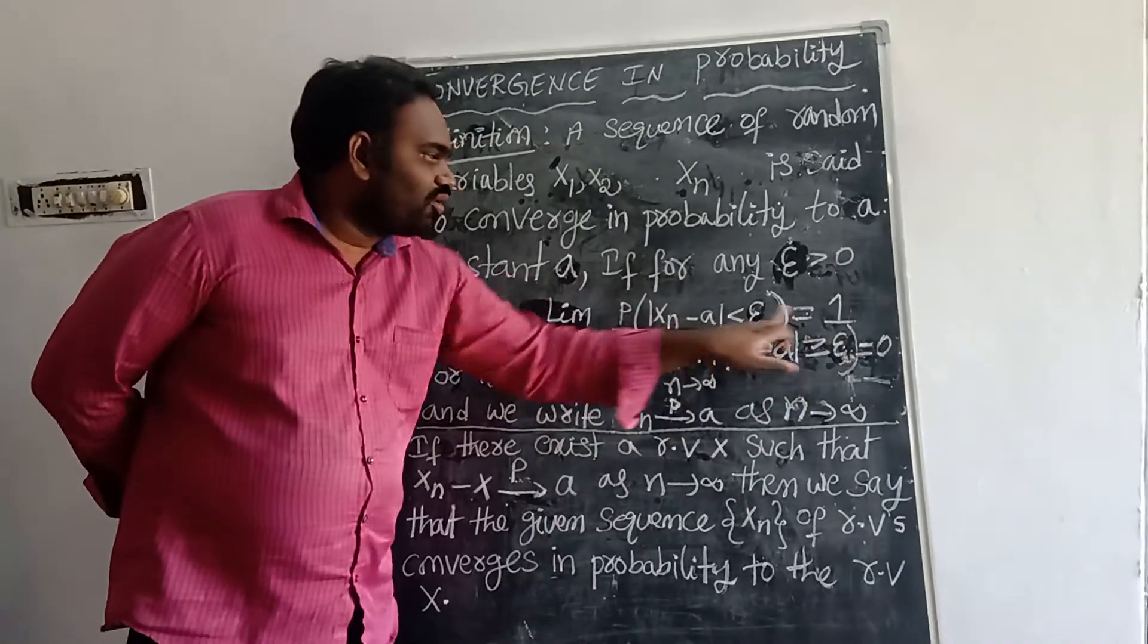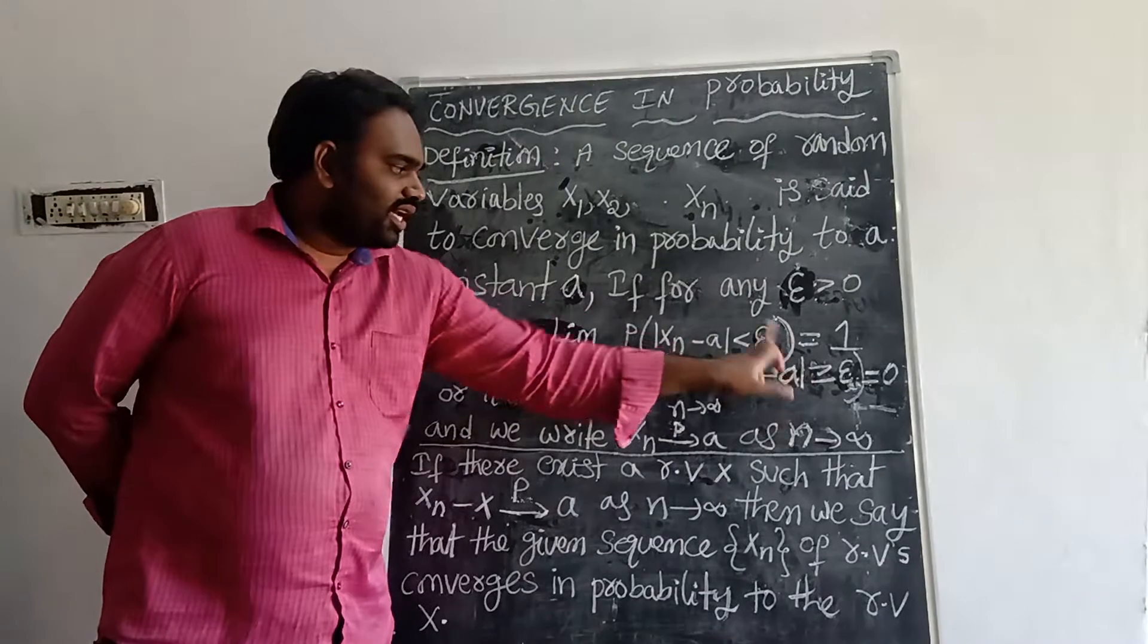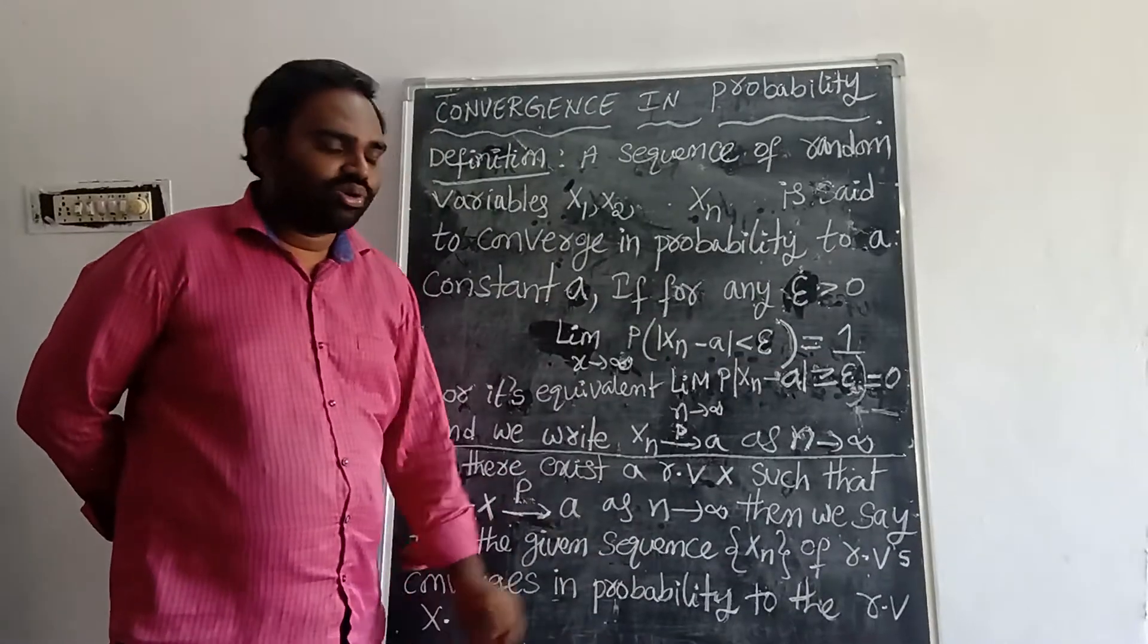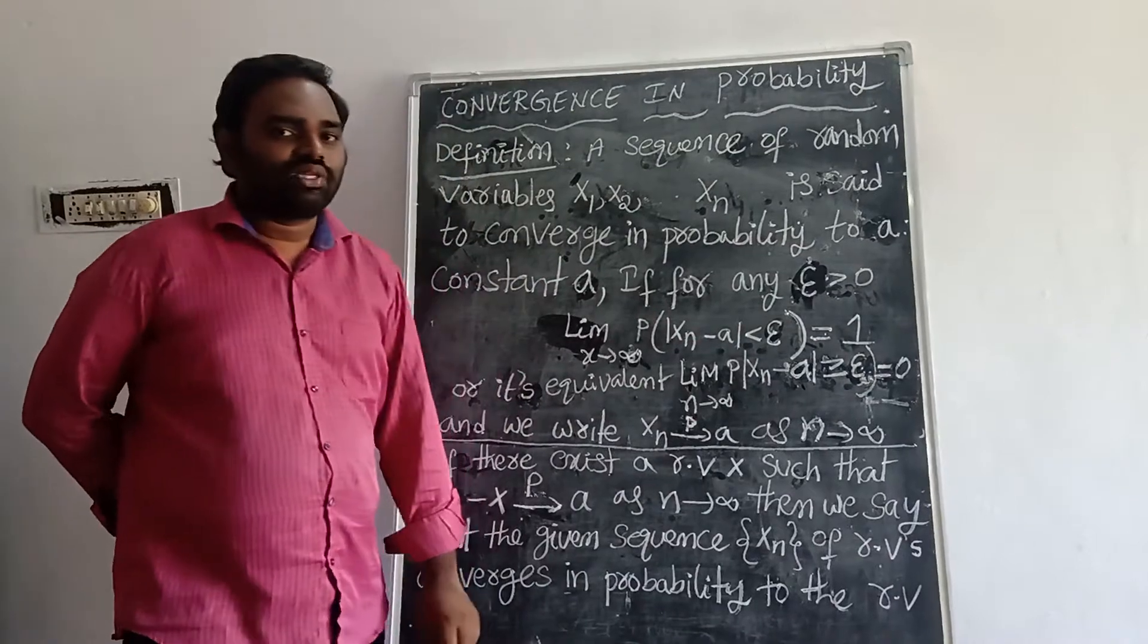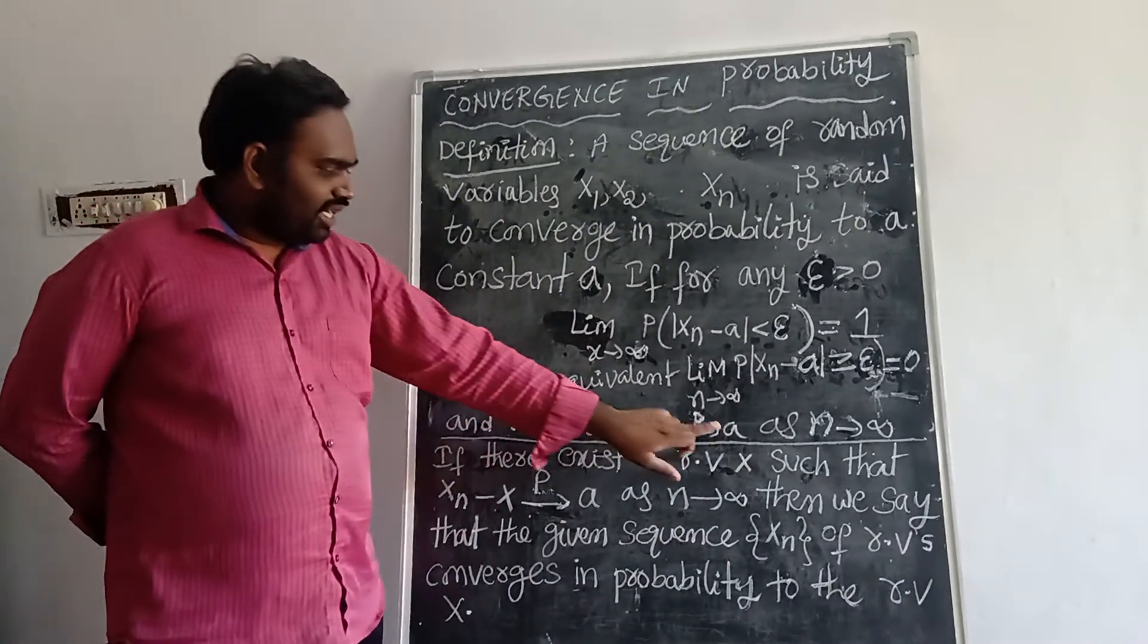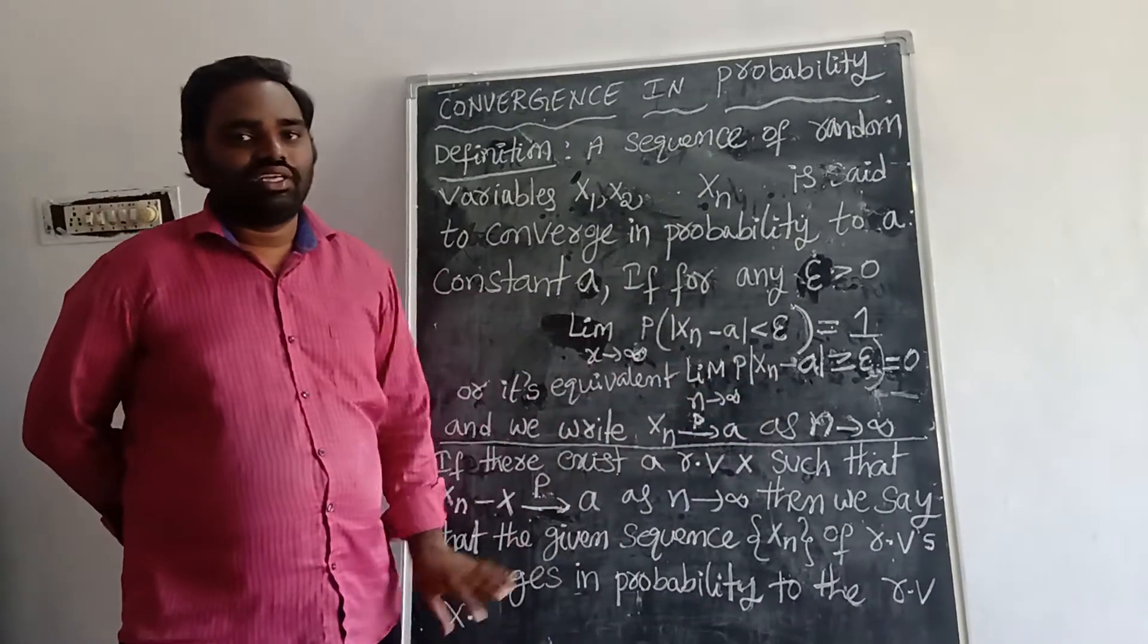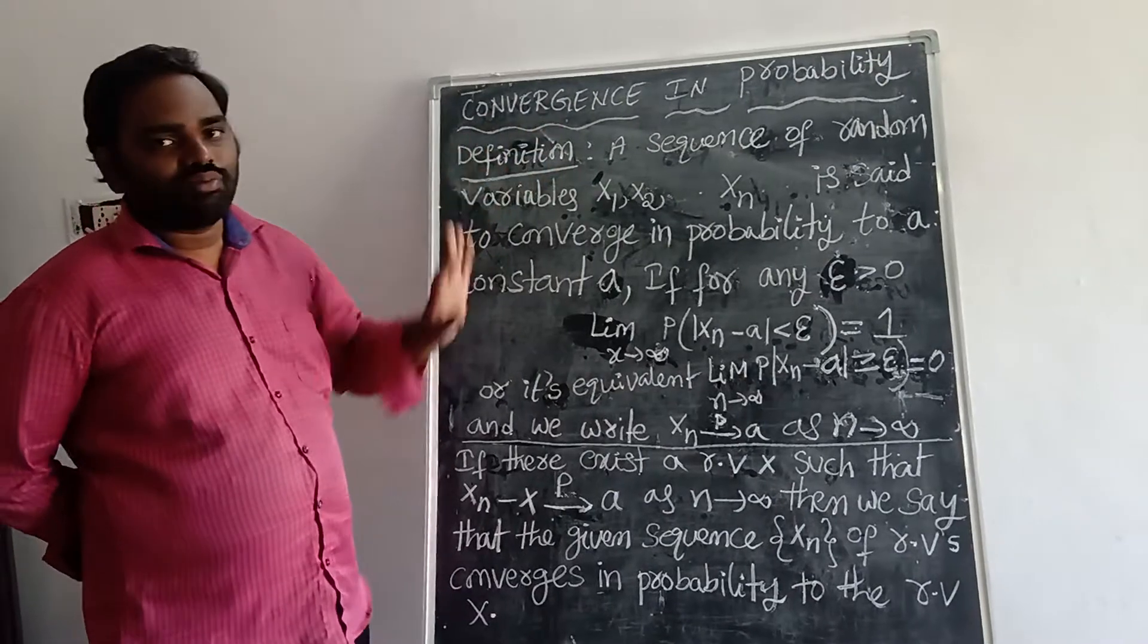epsilon equals 0. Here we are taking the symbol less than, here we are taking the symbol exactly opposite, greater than or equal to. That's why here we are taking one, here also the value is zero. And we write Xₙ tends to a as n tends to infinity. So this is the exact definition of convergence in probability.